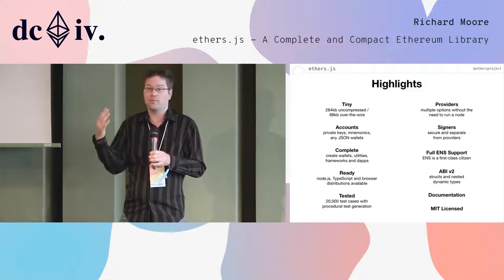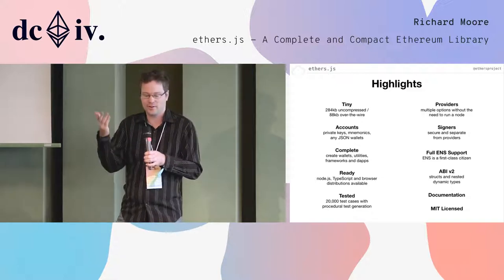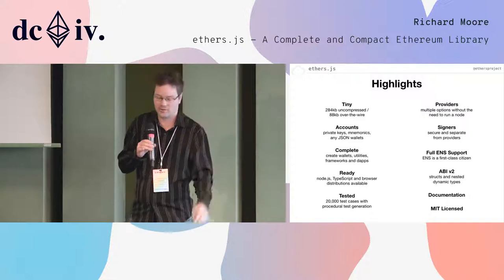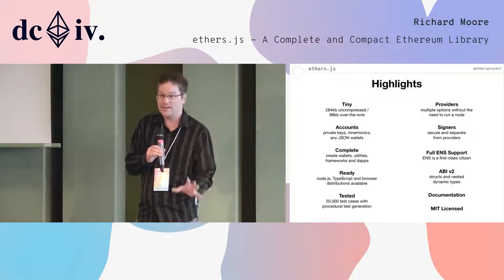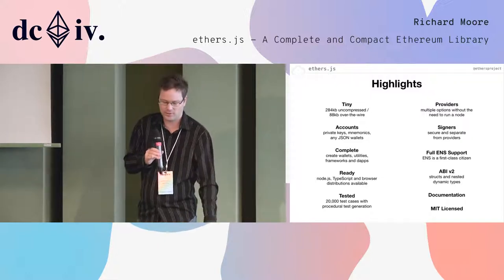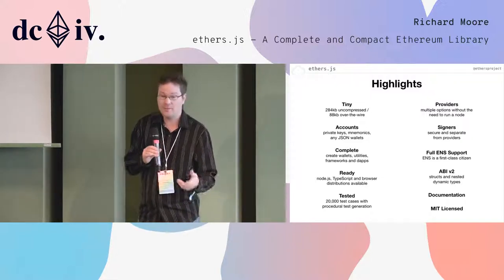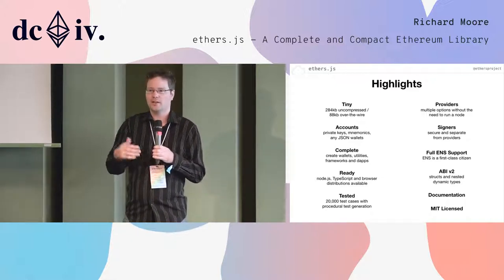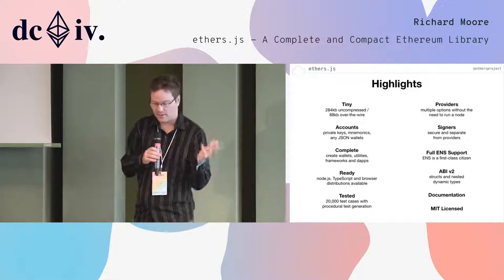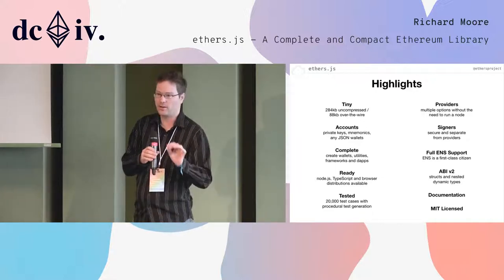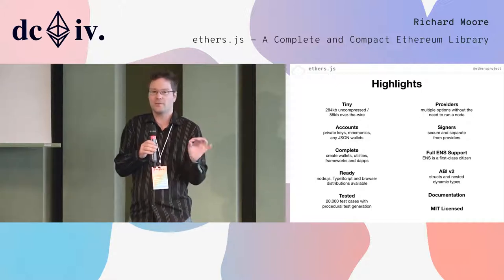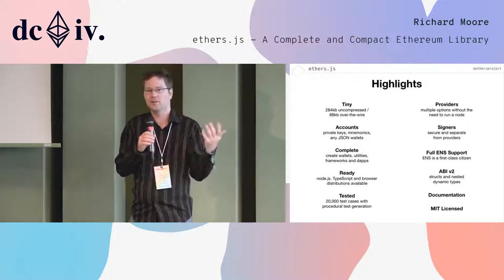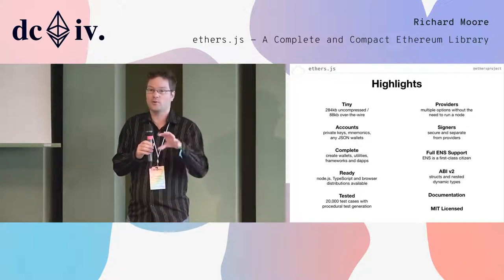Another big difference from people coming from Web3 is that signers and providers are very different, and there are different types of signers. ENS support is a first-class citizen — I'll go more into that in a few slides. ABI v2 has been available in ethers.js for over a year now. All dependencies are MIT licensed, which meant a few libraries like RLP encoding that existed only as GPL or LGPL were rewritten so that they could be MIT licensed.